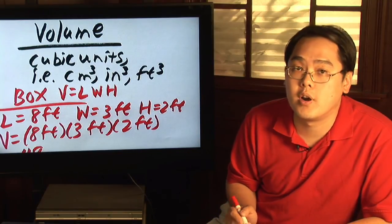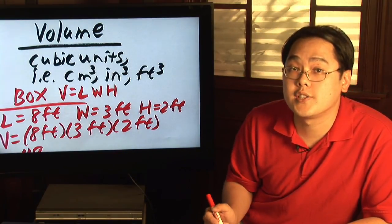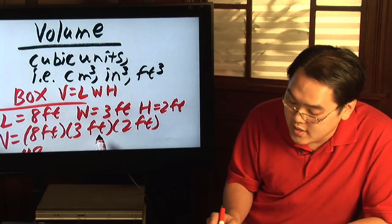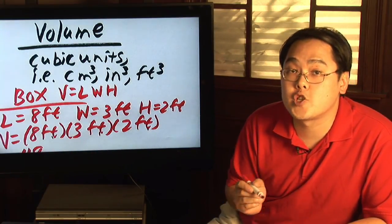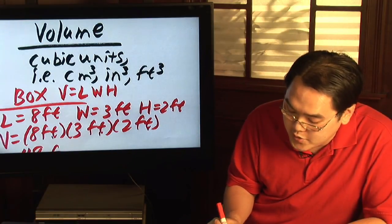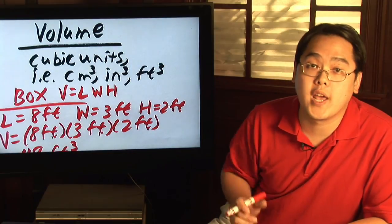But here's the most important part. It's not just feet, you have to multiply the feet units as well. Feet times feet times feet. Because there are three of them that you're multiplying, your final answer is forty-eight feet cubed, or forty-eight cubic feet.